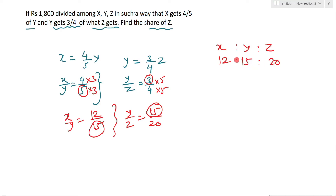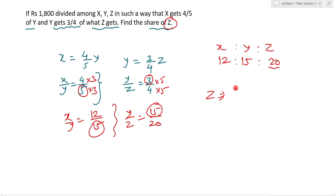Ratio मिल गया। Z का share पूछ रहे थे। Z = 20 units है और total units कितने हैं — 20 + 15 + 12 = 47। तो Z को मिलने वाला हिस्सा है 20/47, और total amount था 1800।